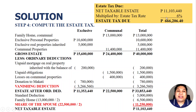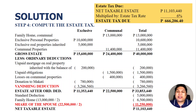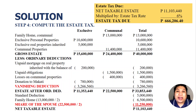This is the estate tax of Juan as a married decedent. After you compute the net taxable estate, you just multiply by 6%. Thank you so much for watching. If you like this video, give me a thumbs up. If you're new to this channel, please subscribe and click the bell so you'll be notified whenever I upload new videos.